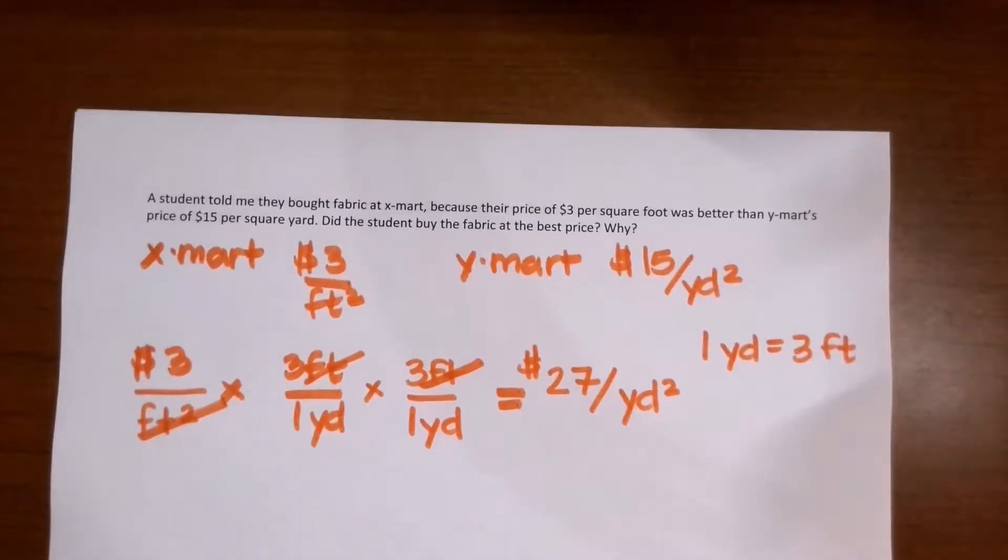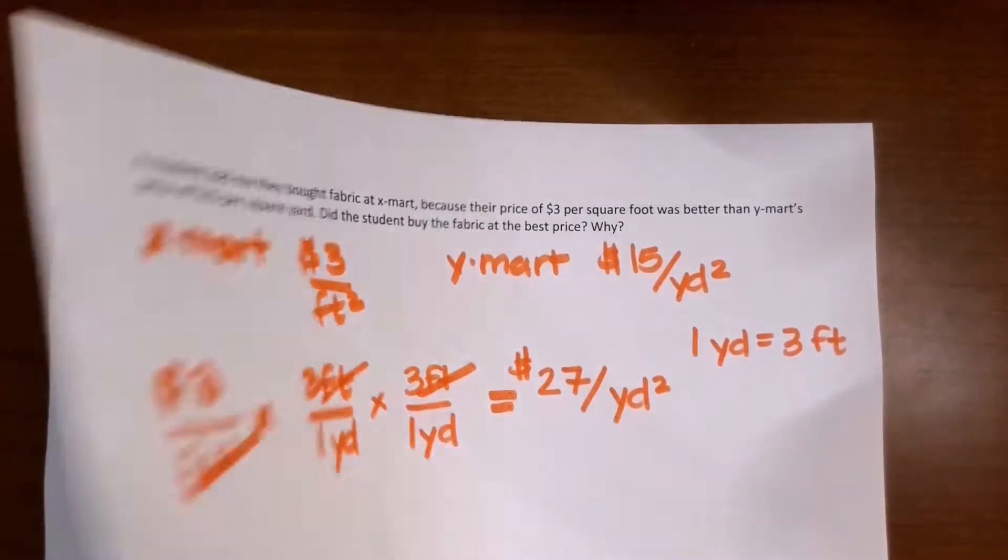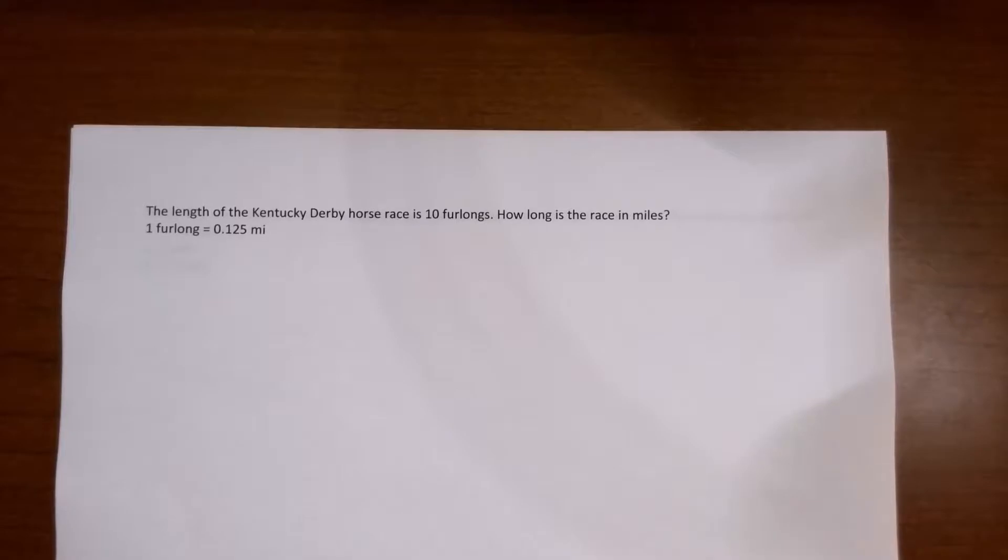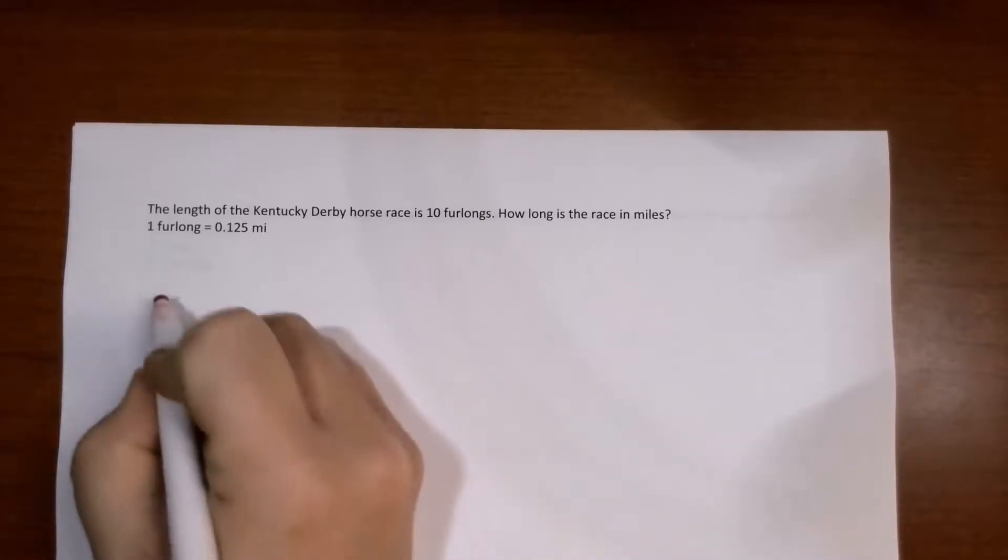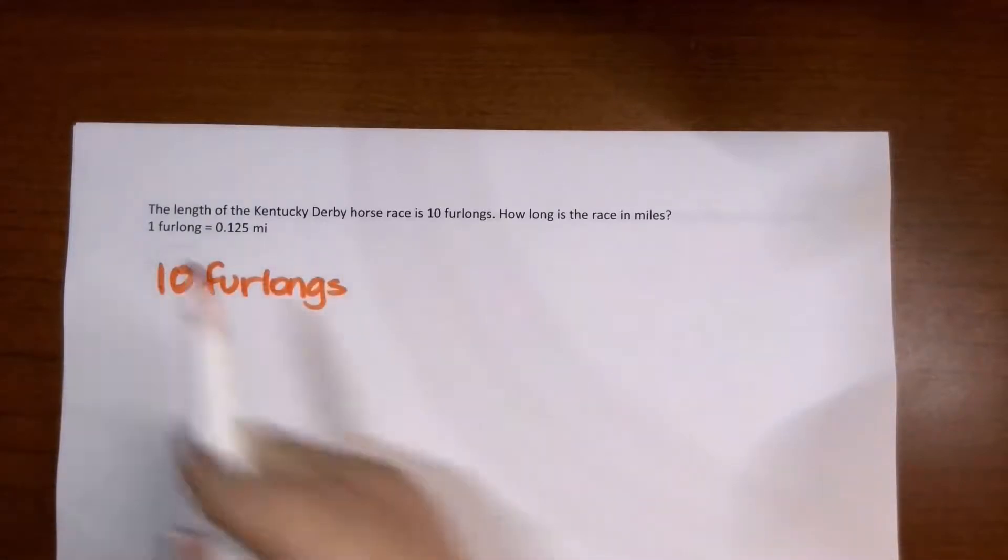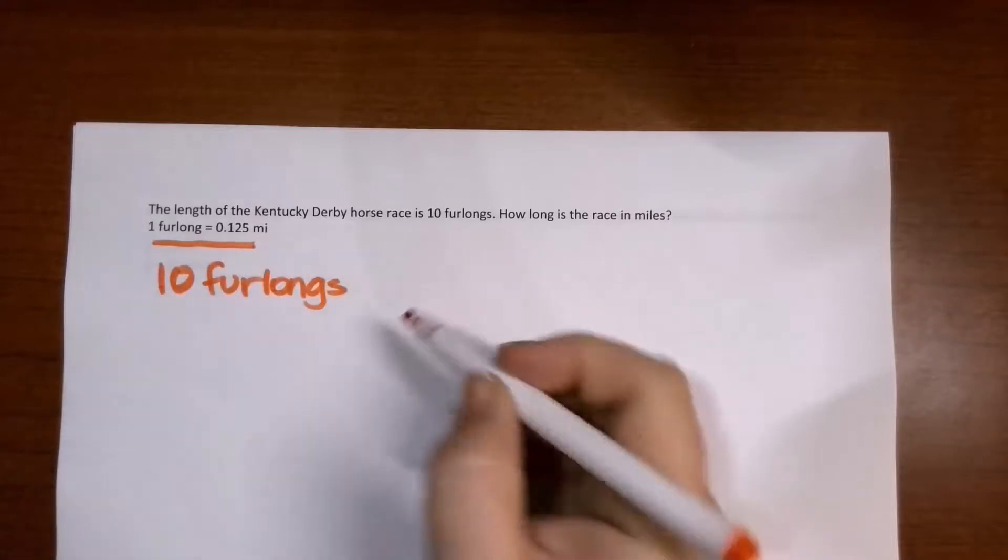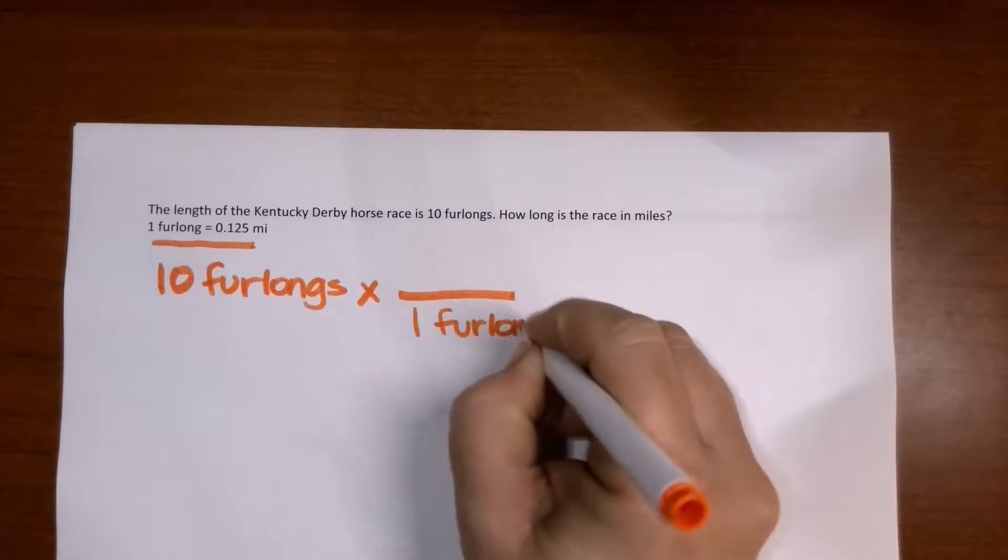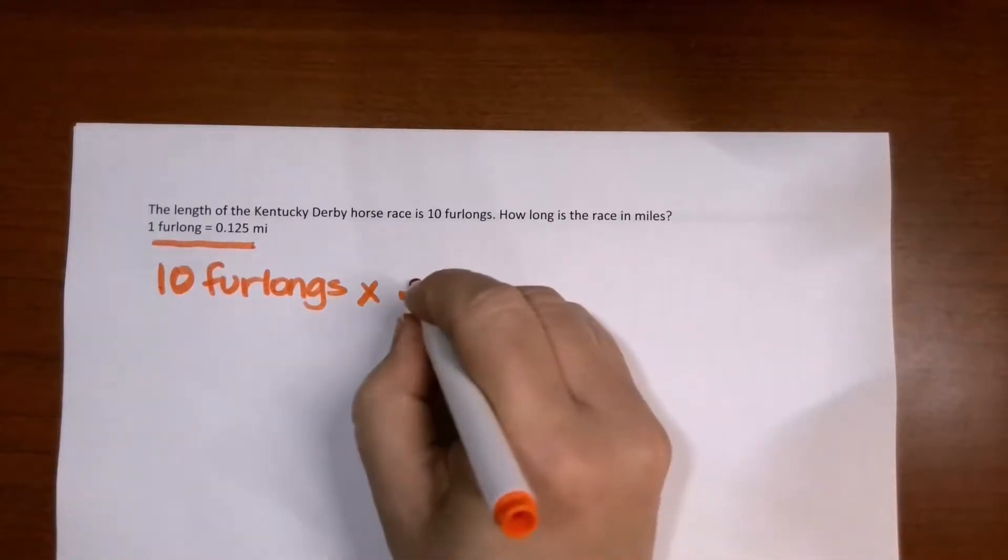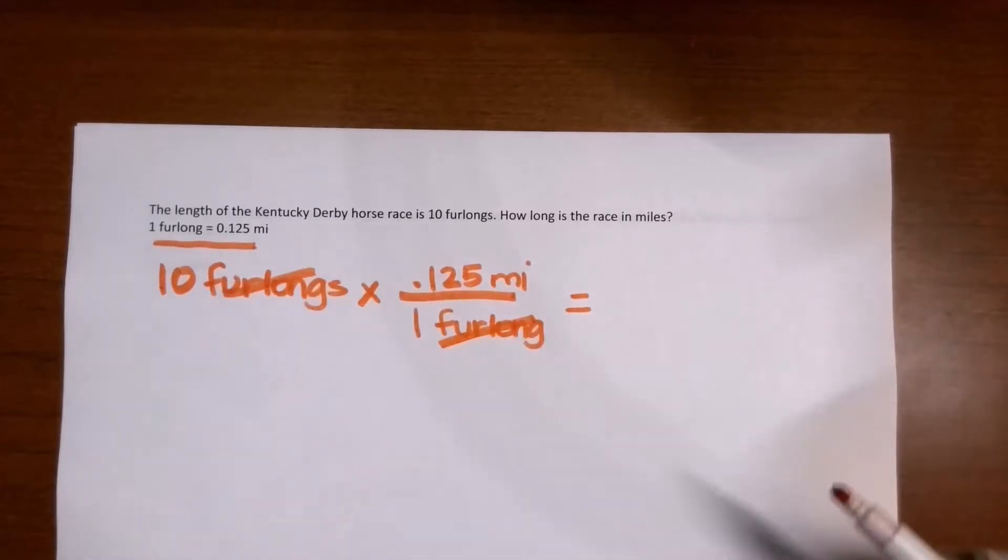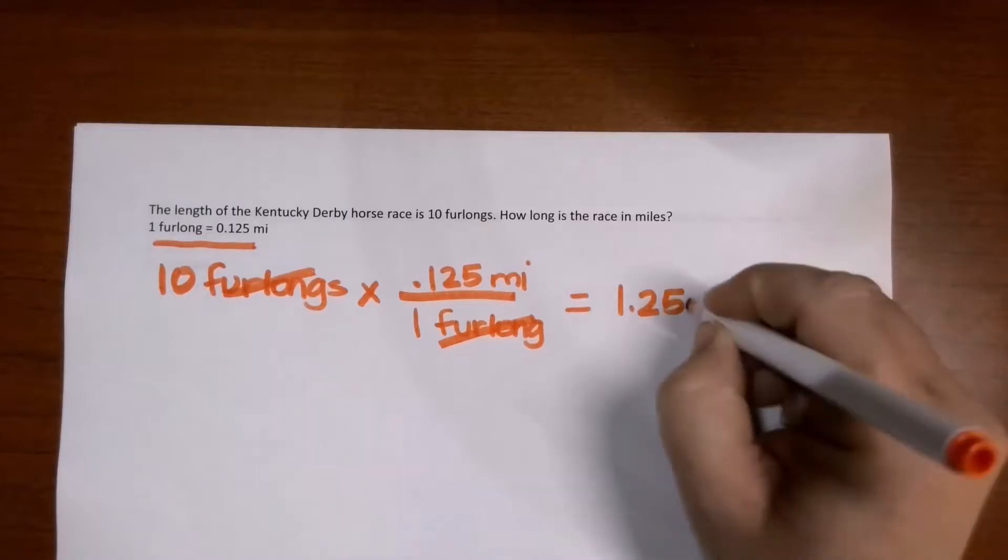Now let's do a second example. This one is about the Kentucky Derby. The length of the Kentucky Derby horse race is 10 furlongs. How long is the race in miles? So this is a unit conversion problem as well. We know the race is 10 furlongs. And we know that one furlong is going to be equal to 0.125 miles. So we need furlongs in the denominator. We put furlong in the denominator, 0.125 miles in the numerator. And when we multiply that out, my furlong will cancel. And that will be 1.25 miles for my final answer.